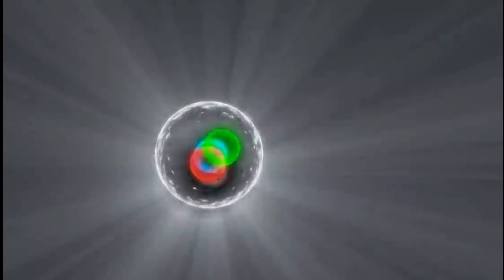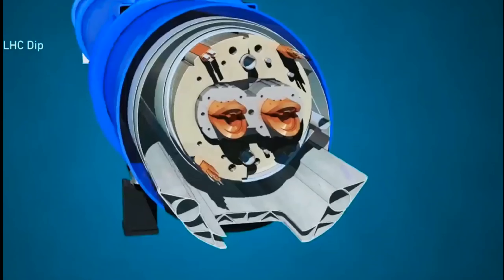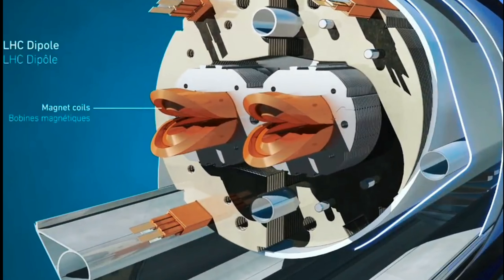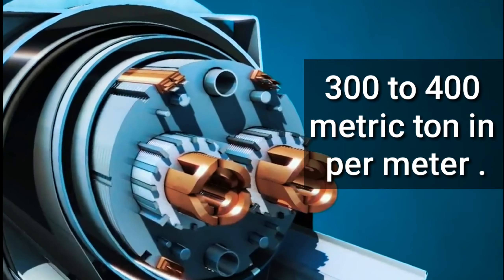These beams, which are made of magnetic coils, are present in tubes that add a force equal to 300 to 400 metric tons of force per meter, so the protons can move to speed close to the speed of light.